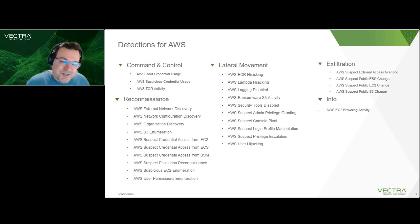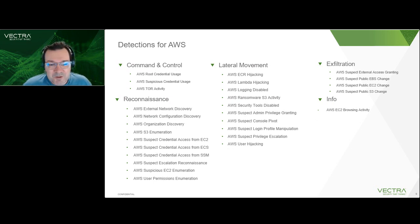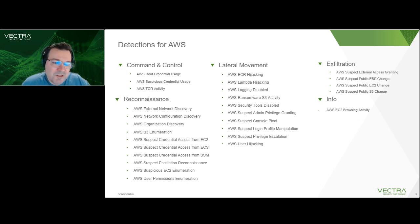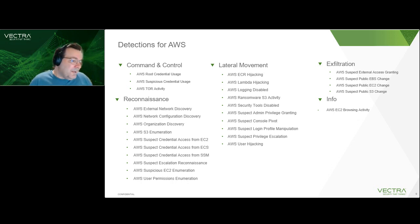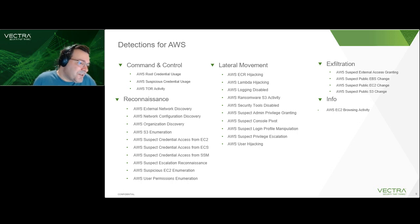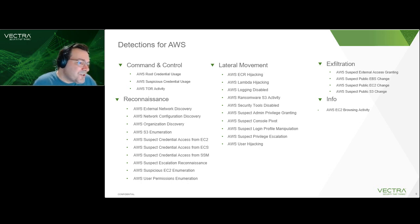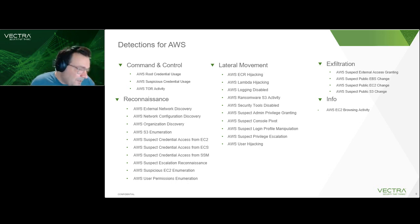Here we have a list of the detections that, as of this webinar, Vectra can find based on real attack scenarios. We break detections down into types: command and control, reconnaissance, lateral movement, exfiltration, and informational. It's often asked why CNC includes AWS root credential usage — my feeling is it doesn't really fit anywhere else, and it shouldn't be used on a regular basis regardless. Tor activity makes sense, suspicious credentials make sense, external network discovery, et cetera.